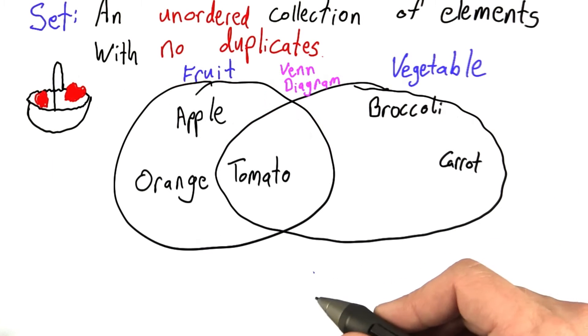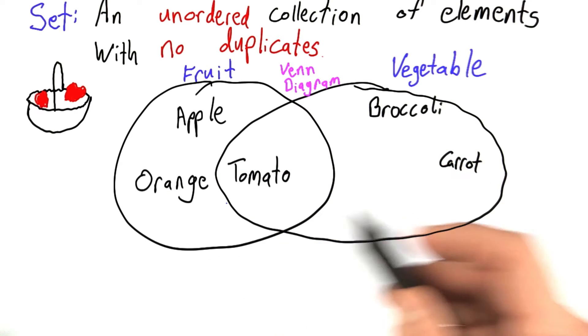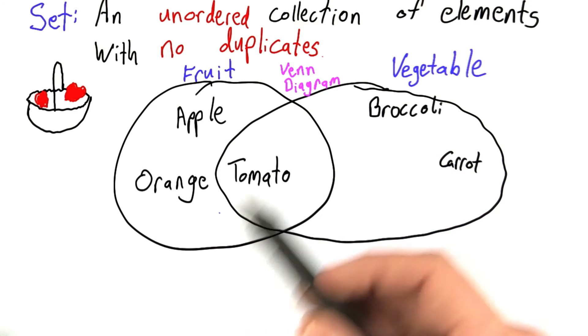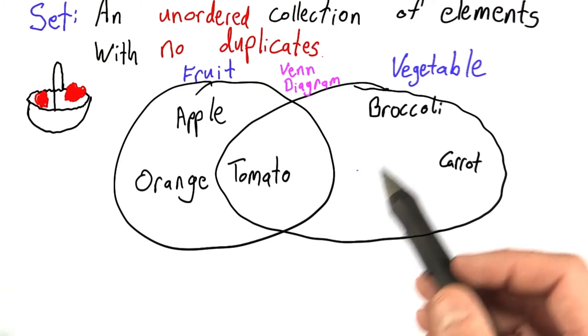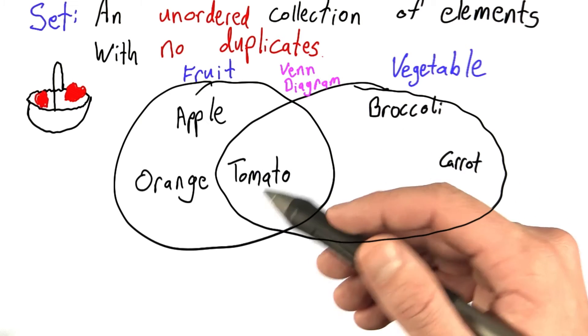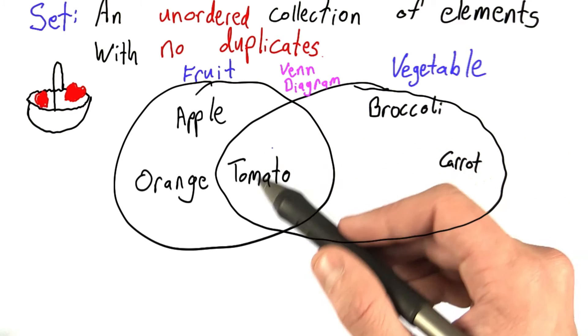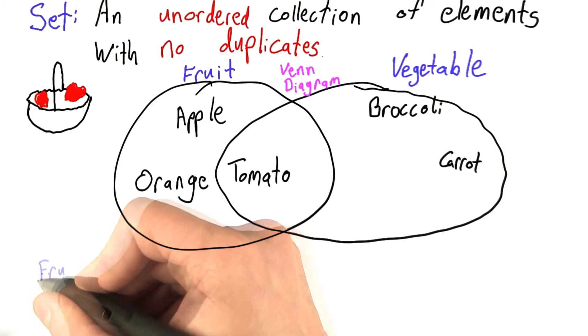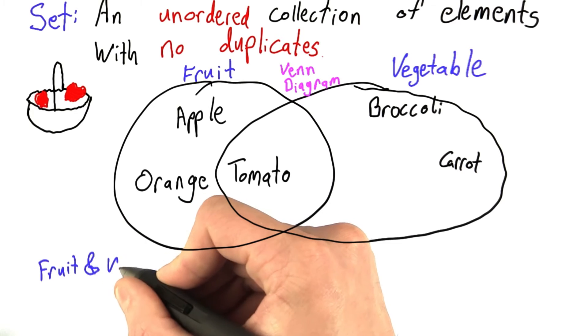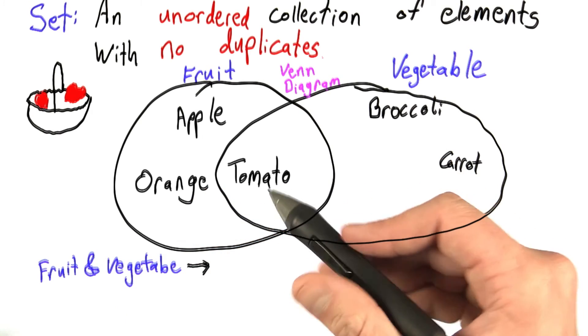Now, here comes the interesting part. We can create new sets by taking subsections or performing operations on these sets. For example, if we want to know what elements are fruits and vegetables, which, like I said before, is called the intersection, we could write fruit ampersand vegetable, and we could see the only element would be tomato.